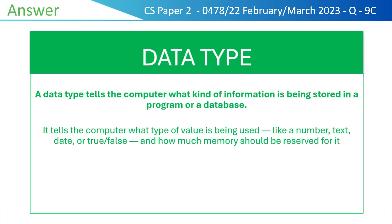let's first have some understanding of the data type and basic kinds of data types. A data type tells the computer what kind of information is being stored in a program or a database. It tells the computer what type of value is being used, like a number, text, date, or true/false, and how much memory should be reserved for it.